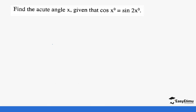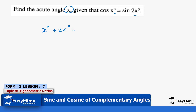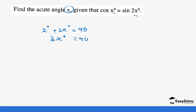For the last question, find the acute angle x given that cos x equals cos 2x. Since they are complementary, x plus 2x equals 90, so 3x equals 90, and dividing by 3 gives x equals 30 degrees.